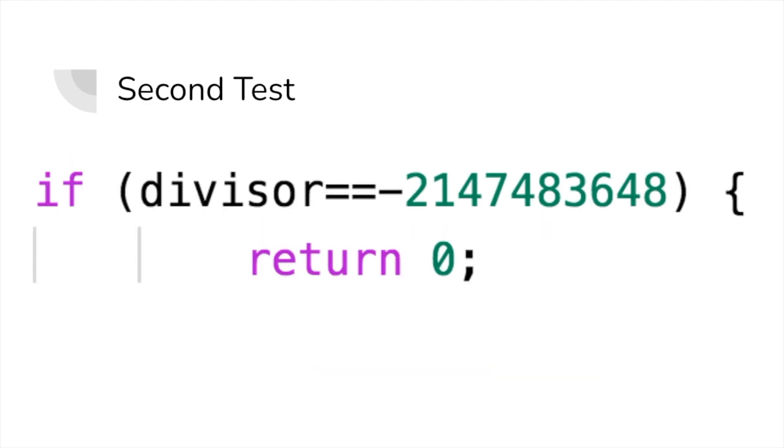Here at the start, we're going to be running a simple return statement that happens whenever the divisor is the lower integer limit. Since the lower integer limit is the biggest number there is here, it makes sense to add this small, simple check.